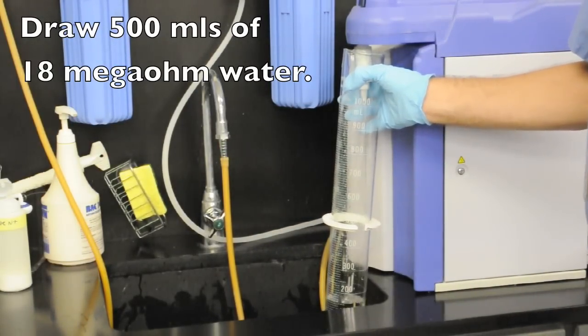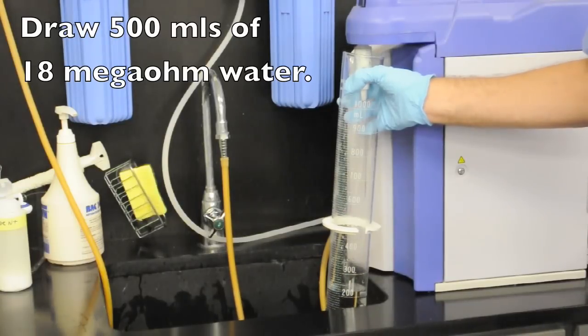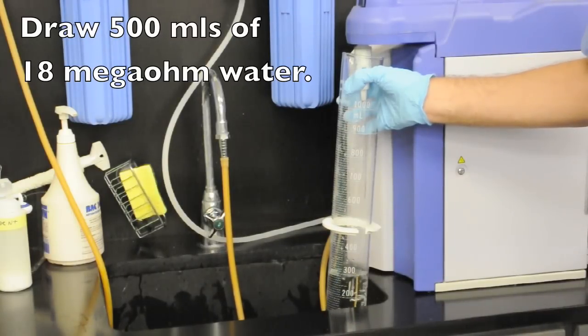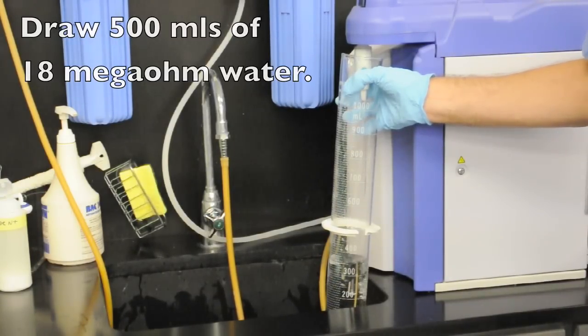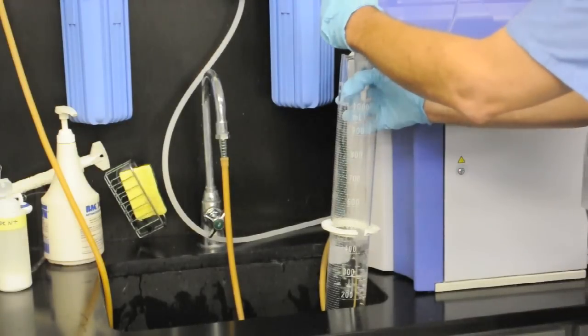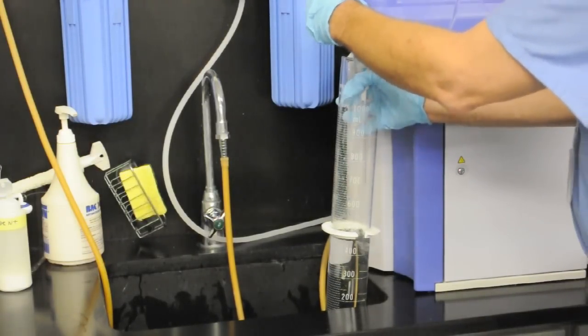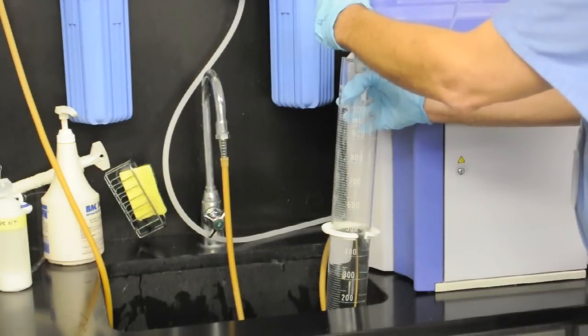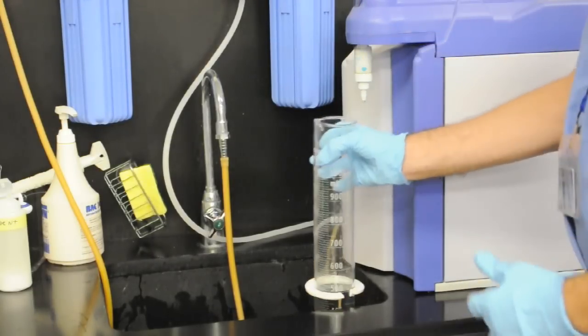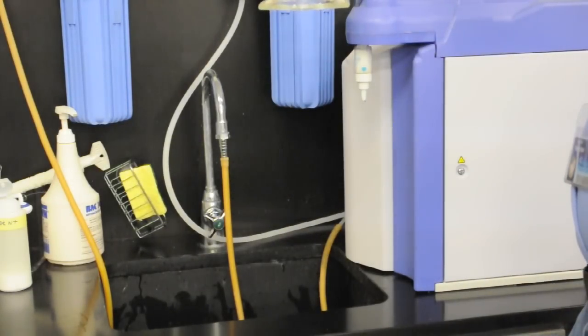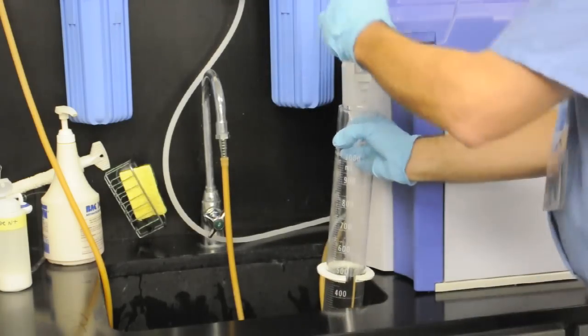The 18 megaohm water source that we use produces highly purified water and it has two positions on the switch, a constant flow and also a pulse flow. So we run it on a constant system until we get nearly to the top and then we use the pulse button to bring the water up exactly.